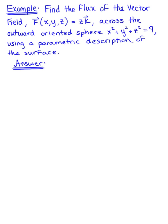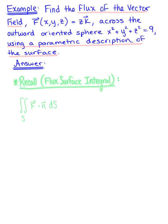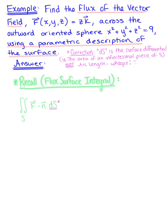Find the flux of the vector field across the outward-oriented sphere using a parametric description of the surface. We are being asked to compute the flux surface integral. The formal definition is the double integral over surface S of the vector field dotted with the normal vector with respect to arc length. Since arc length isn't a good parameter, we convert this to the computation-ready definition: the double integral over region R, where R is the projection of the surface onto the plane, of the parametrized vector field dotted with the normal vector, defined as the cross product of the tangent vector in the u direction with the tangent vector in the v direction.